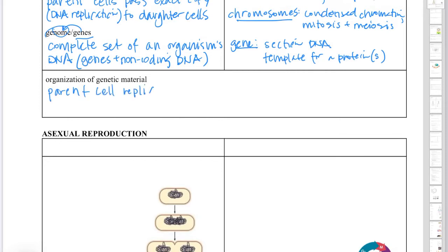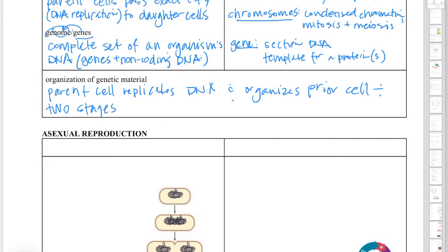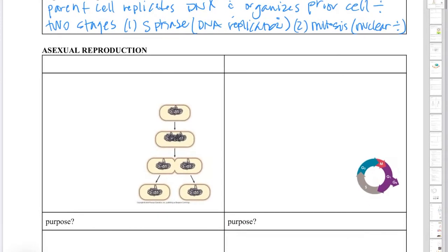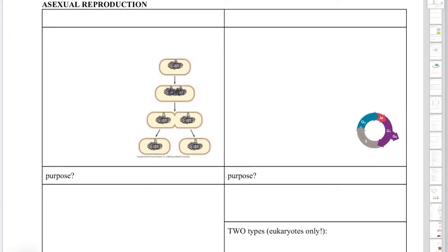Now let's talk about how DNA is organized so that it can be passed to offspring. The parent cell replicates the DNA during the S phase and organizes it before cell division, so it can pass an exact copy to two daughter cells. It happens in two stages: the DNA is replicated during the S phase — we call that DNA replication — and then the DNA is divided during mitosis, which is just nuclear division.